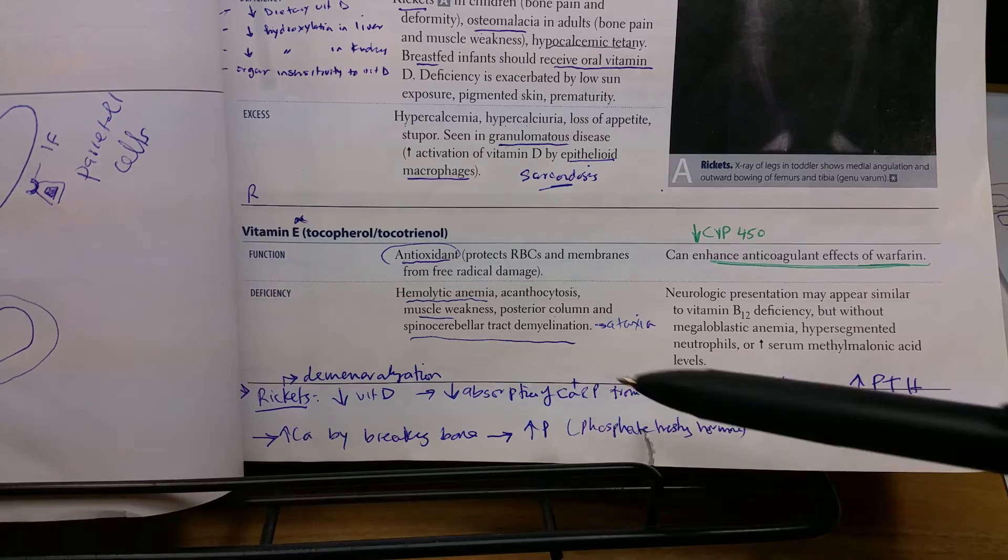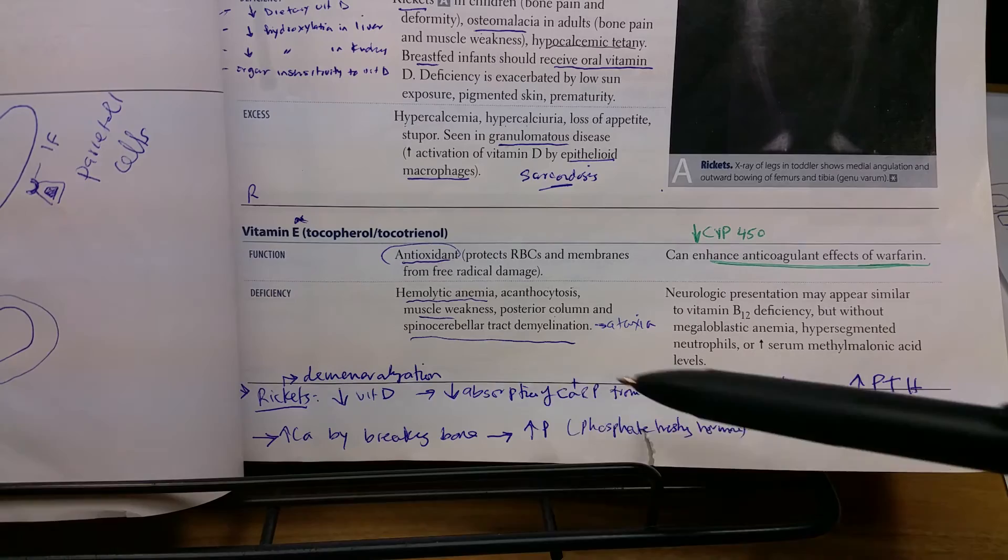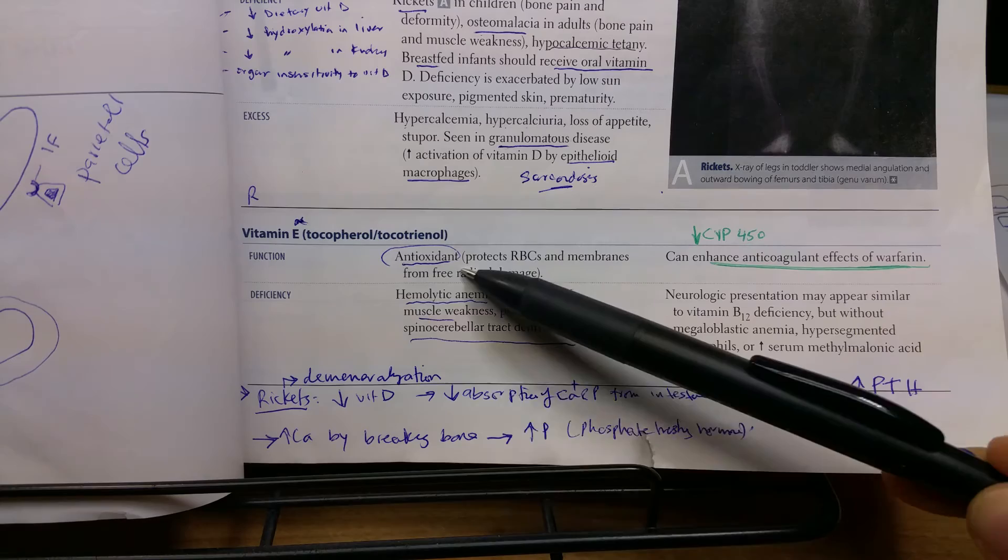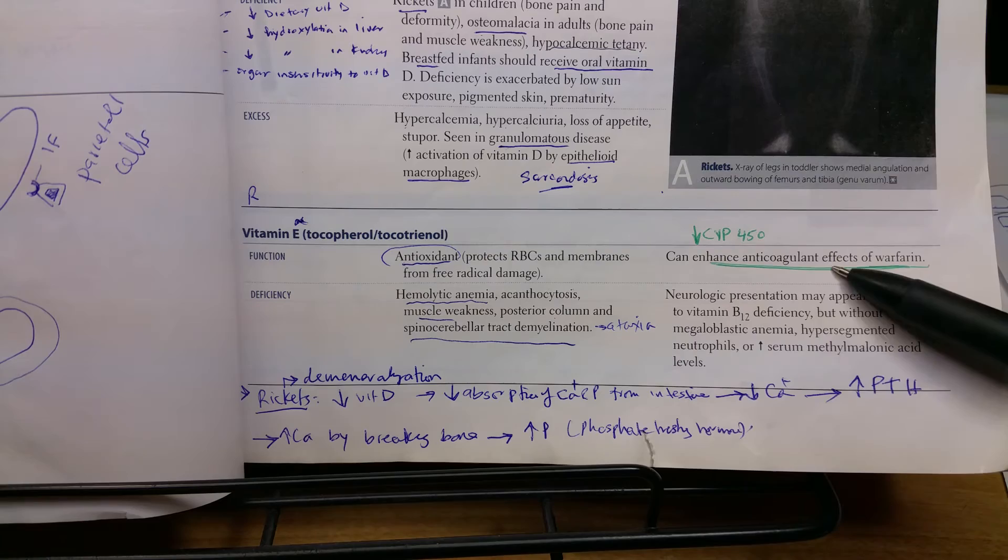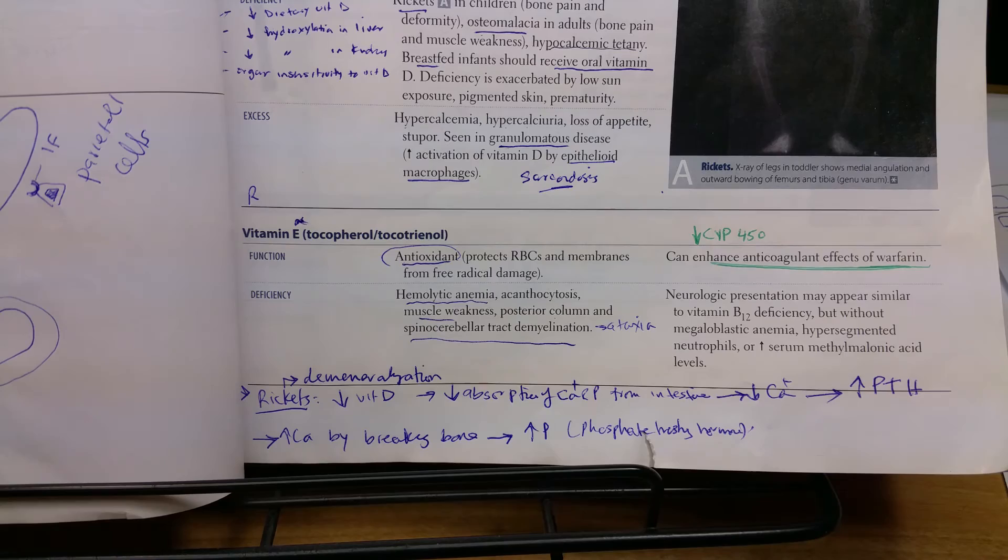We'll talk now about vitamin E, tocopherol. It's an antioxidant that protects the RBCs from damage by free radicals. In deficiency, it causes hemolytic anemia. Note here that it's a cytochrome P450 inhibitor and it enhances the anticoagulant effect of warfarin.